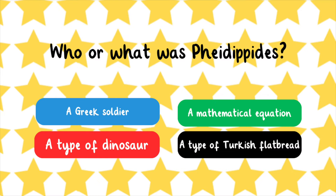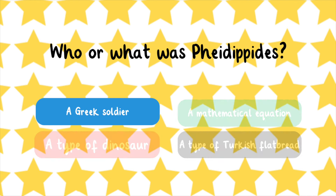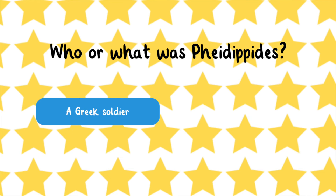Who or what was Pheidippides? A Greek soldier, a type of dinosaur, a mathematical equation, a type of Russian, or a type of Turkish flatbread? Pheidippides was a Greek soldier who ran from Marathon, Greece to Athens in 490 B.C. to bring news of a victory over the Persians. This distance was 25 miles.